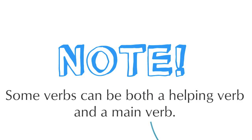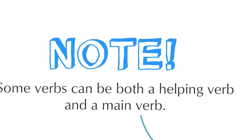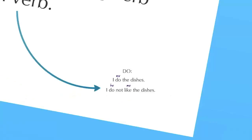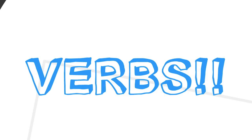It is also important to note that some verbs can be both a helping verb and a main verb. One example is the verb to do. In 'I do the dishes,' do is a main verb. In 'I do not like the dishes,' do is a helping verb. Some other examples of verbs that can be both a main verb and a helping verb are to have and to be. I hope these tips help you when identifying the verb in a sentence. Good luck!